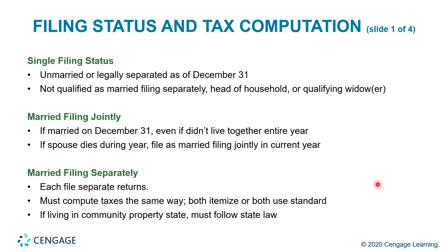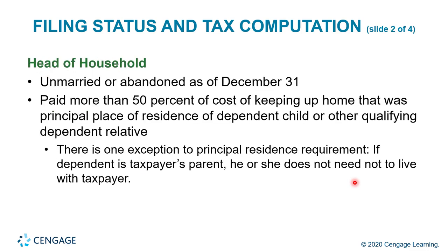For married filing separately, each spouse files a separate return and must compute taxes the same way — both must itemize or both must use the standard deduction. If living in a community property state, they must follow state law. Married filing separately is a high tax bracket to be in because your standard deduction is so low. For head of household, you must be unmarried or abandoned as of December 31st and have paid more than 50% of the cost of keeping a home.